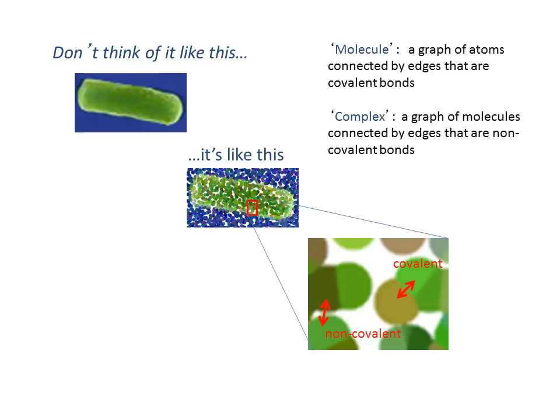Since we are dealing with many punctate atoms and the pairwise edges that connect them, we can describe the cell as a big network of atoms and bonds. We can also describe aggregates of atoms within that network and describe the structure of these connected subgraphs. When we speak of the graph that results from covalent bonds between atoms, we call that a molecule. When we speak of the graph resulting from non-covalent interactions between molecules, we call that a complex.